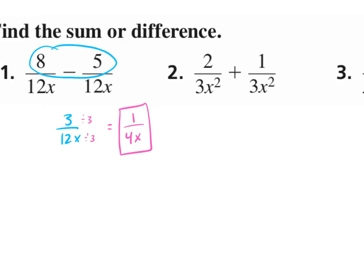Let's do number 2. We add the numerators and get 3 over 3x squared. Can this be simplified? Yes — we divide the top and the bottom by 3, and that gives us 1 over x squared.